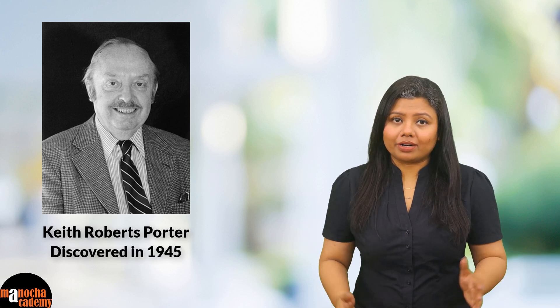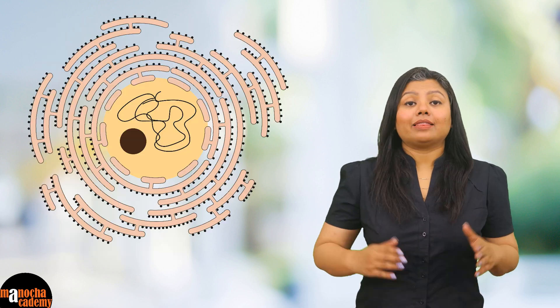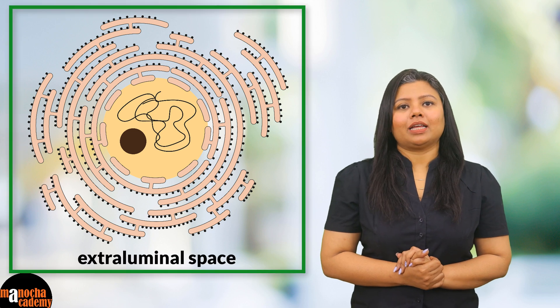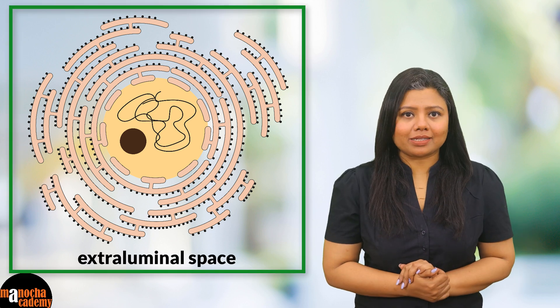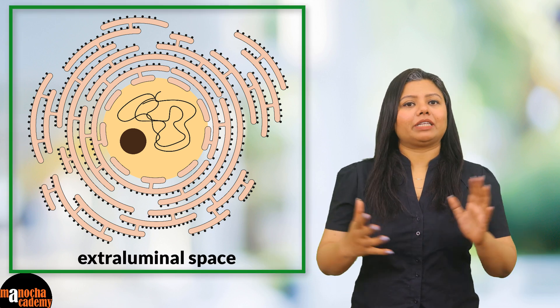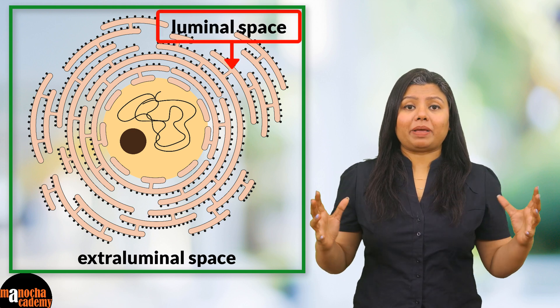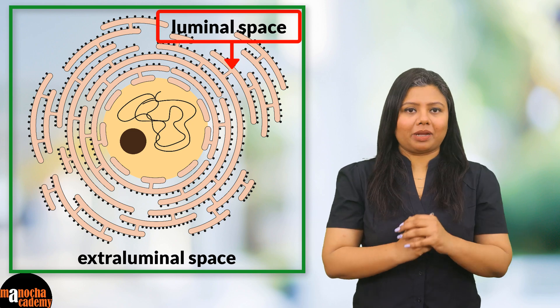It was discovered independently by Porter and Thompson in 1945. However, Porter named it the endoplasmic reticulum. The endoplasmic reticulum is a membrane that divides the cytoplasm into two areas: first, the extra-luminal space, which is the cytoplasmic space, and the luminal space, which is the space enclosed within the endoplasmic reticulum.